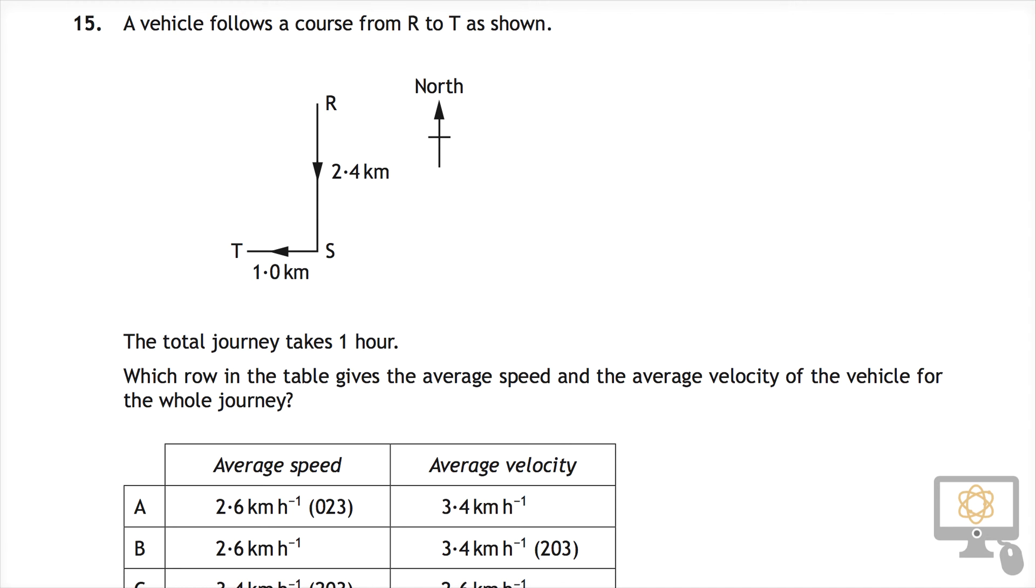Right, so we're on to question number 15 from the National 5 2014 physics paper. A vehicle follows a course from R to T as shown.